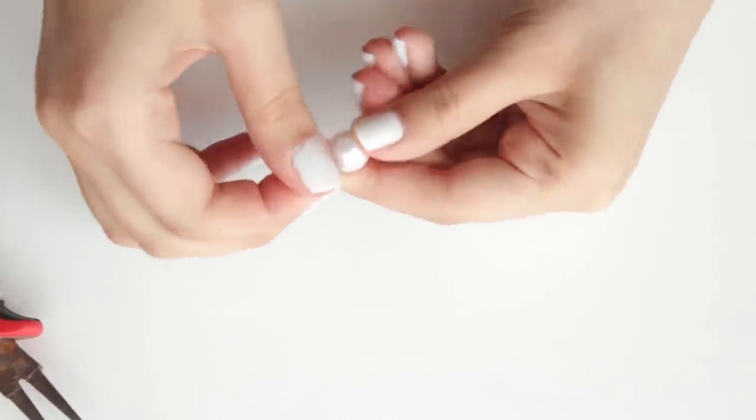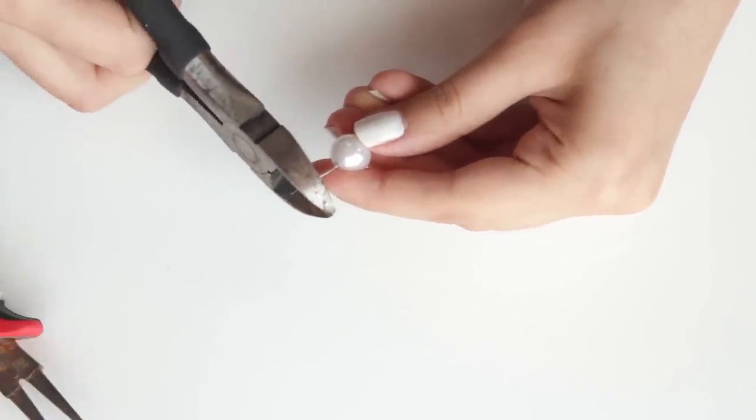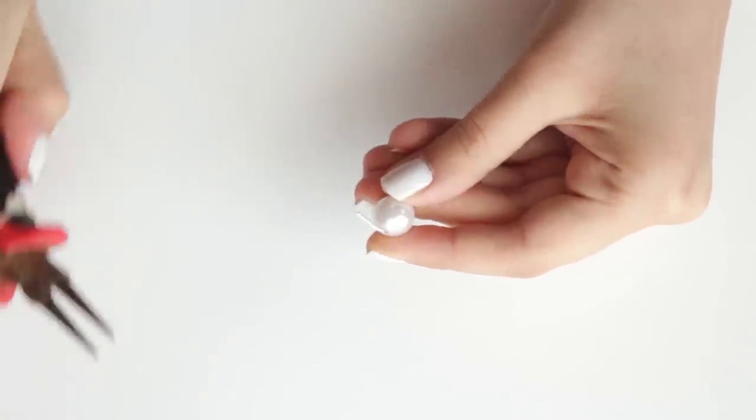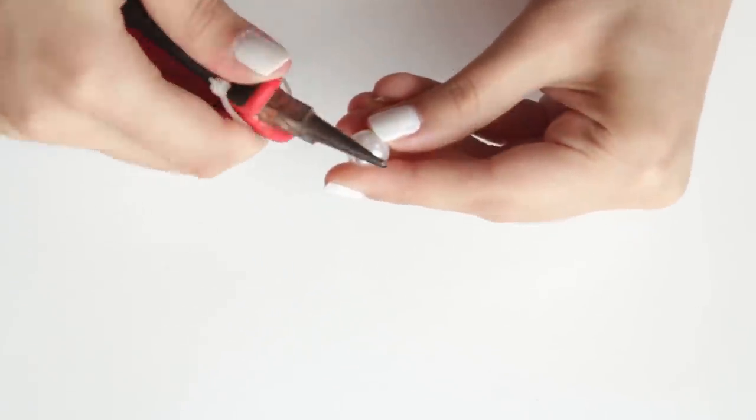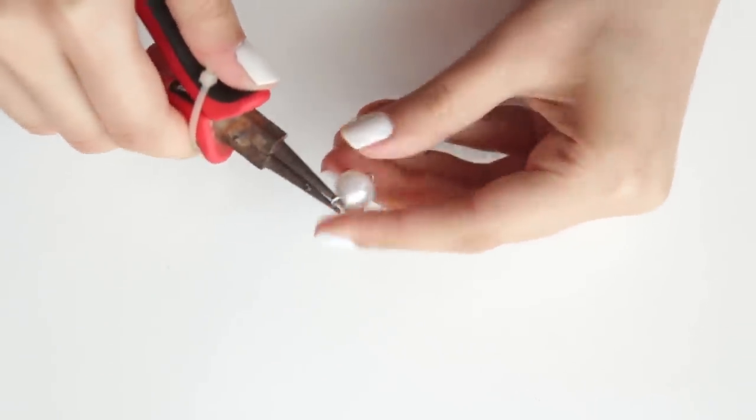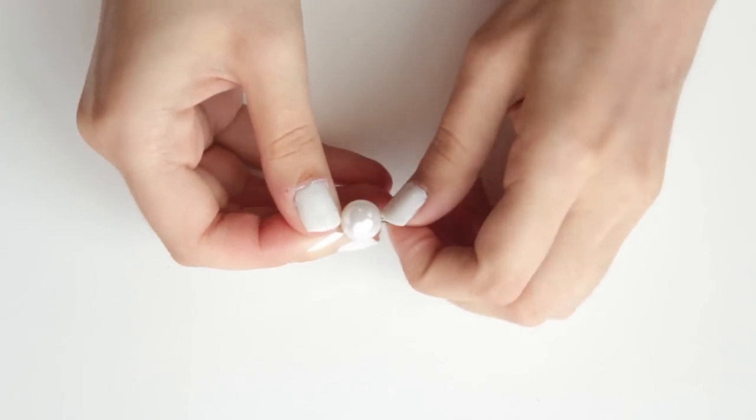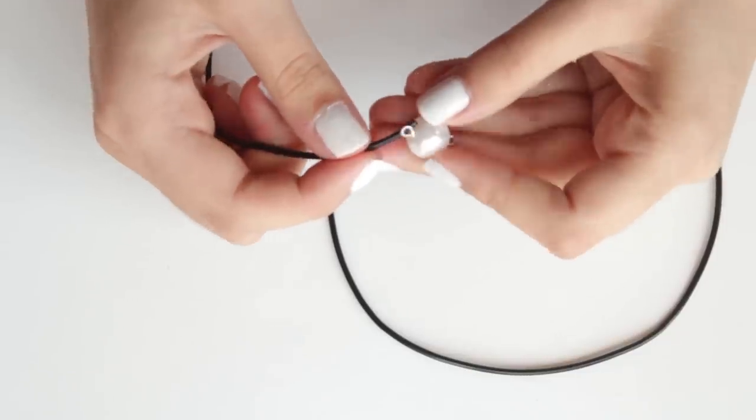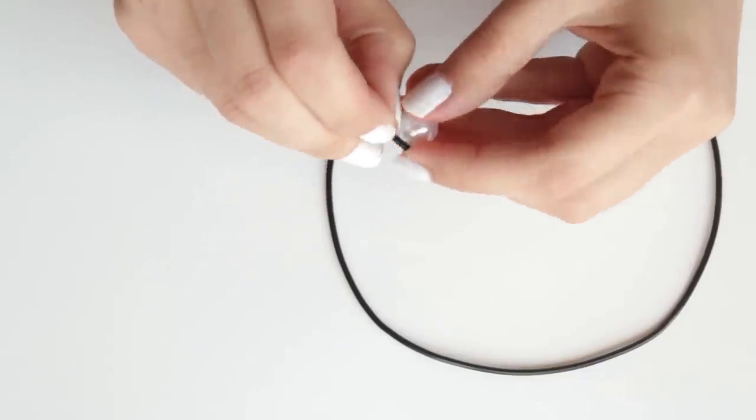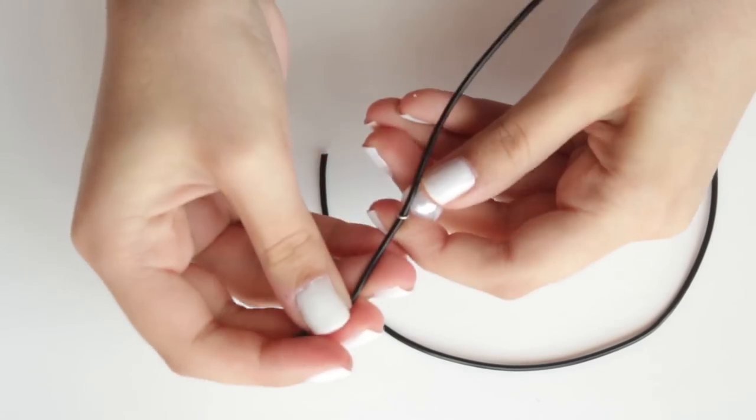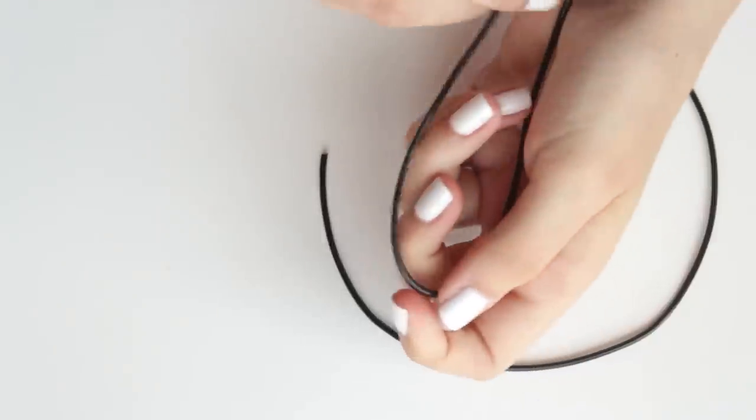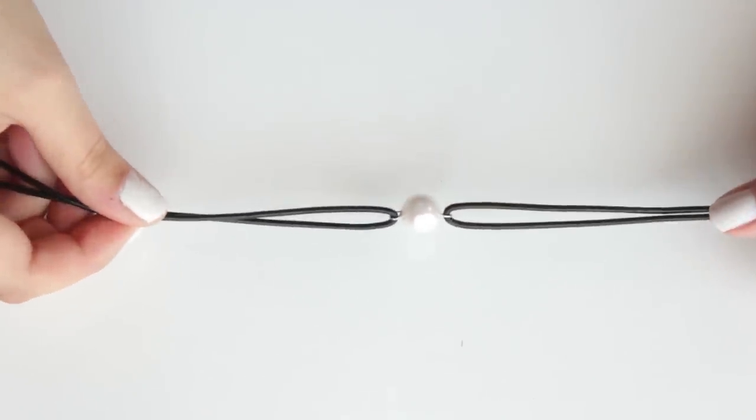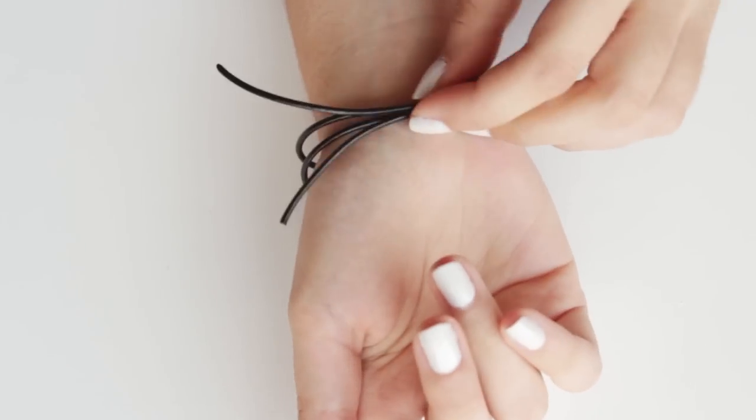Do the same on the other side. Put the leather through the loops. Measure how much excess you have and cut it.